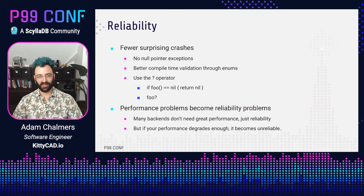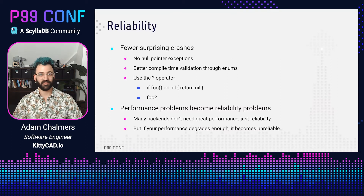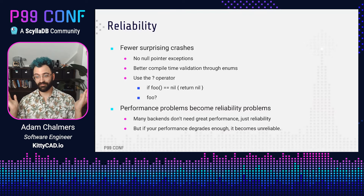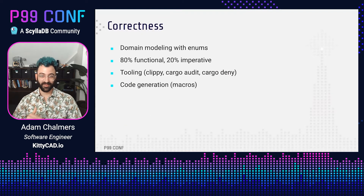I know this talk isn't really about performance, but performance and reliability do have an important overlap: if your code is too unperformant, it becomes a reliability problem. If your code is too slow, you're going to start timing out and requests are going to start getting failed. From the user's perspective, a timed out request and a request to a backend that's down are indistinguishable. So performance problems can become reliability problems. Building a backend on a very performant language can actually help you quite a lot with reliability.